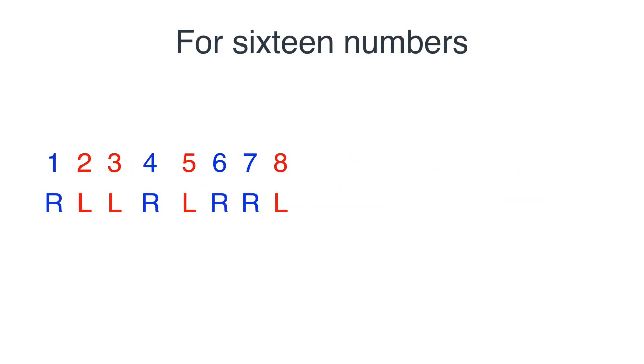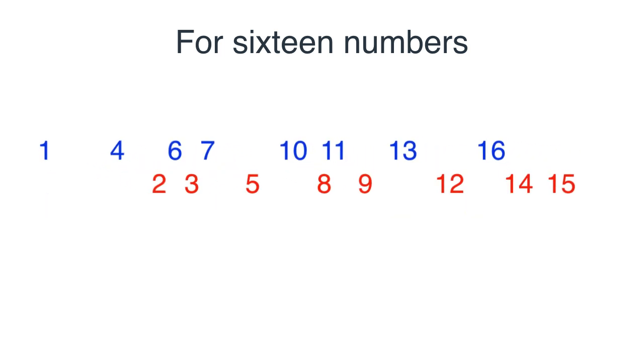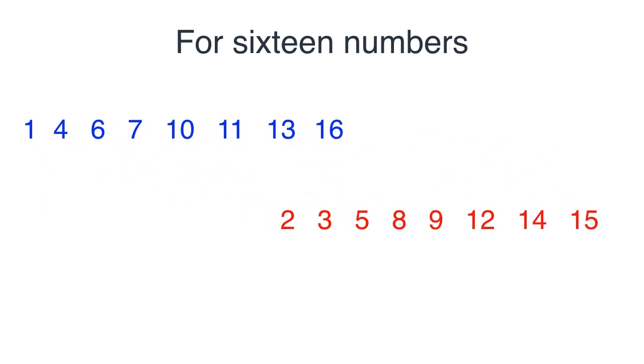If we continue it for the next eight numbers, that gives me the colors for the numbers 9 all the way to 16. And if I split them into two sets according to the color, then the sums are gonna be the same. They're 68. The sums of squares are gonna be the same because they're 748. And the sums of cubes are the same. They're 9,248.